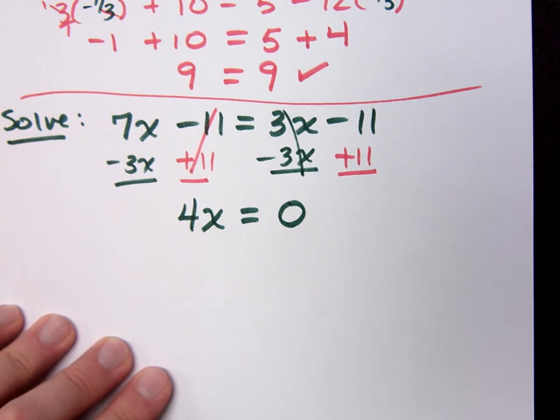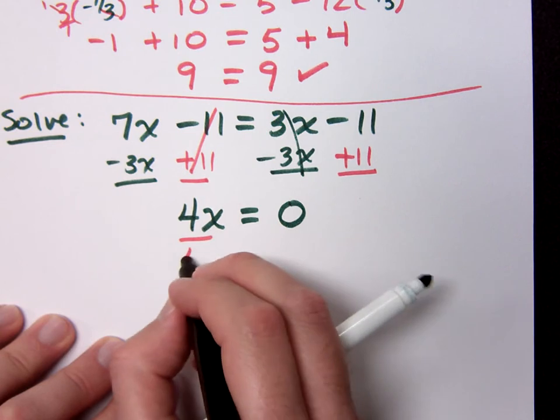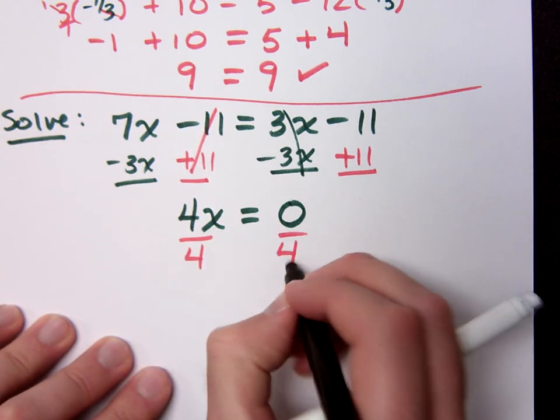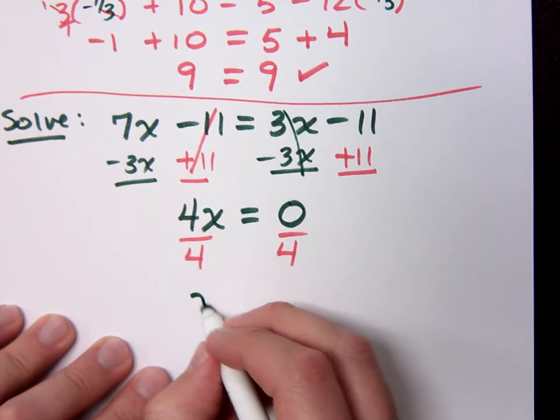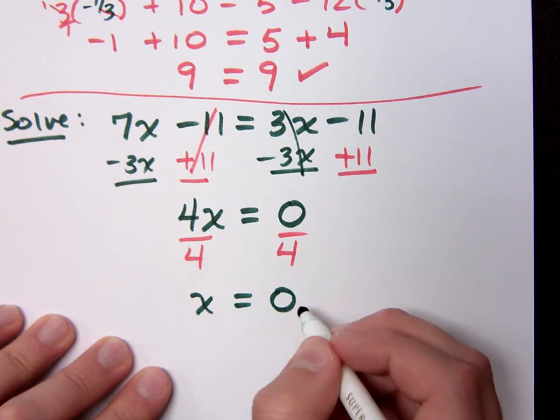How do I finish getting x by itself? Divide by 4. You divide by 4, so x equals what? Zero. So, zero divided by 4 is zero, right?